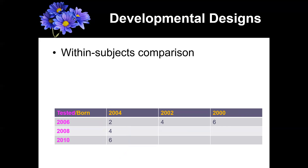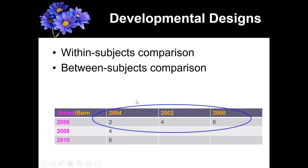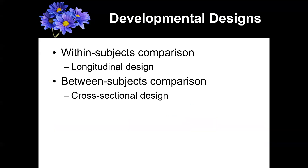On the other hand, you can also do a between-subjects version — a cross-sectional design. Not manipulating age, but letting age be what it is and comparing different people with different ages. Rather than testing the same group and waiting two years each time, you instead recruit someone born in 2004 who would be two, someone born in 2002 making them four, and someone born in 2000 making them six. They all get tested within the same time frame, rather than waiting for them to actually age. That's a cross-sectional design.